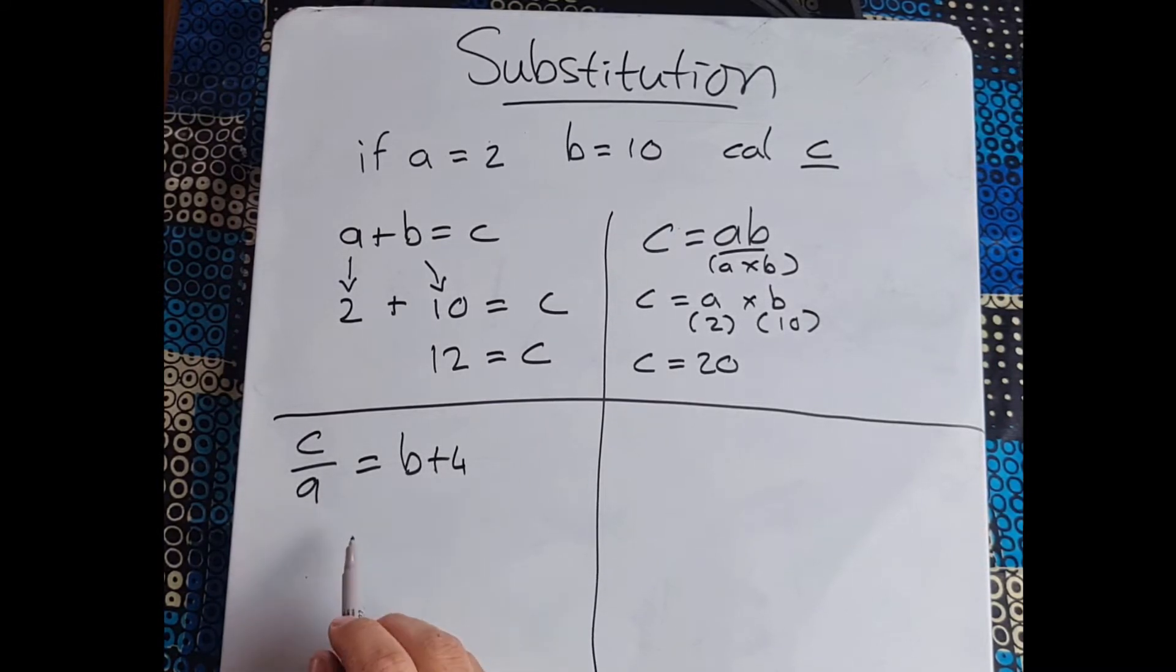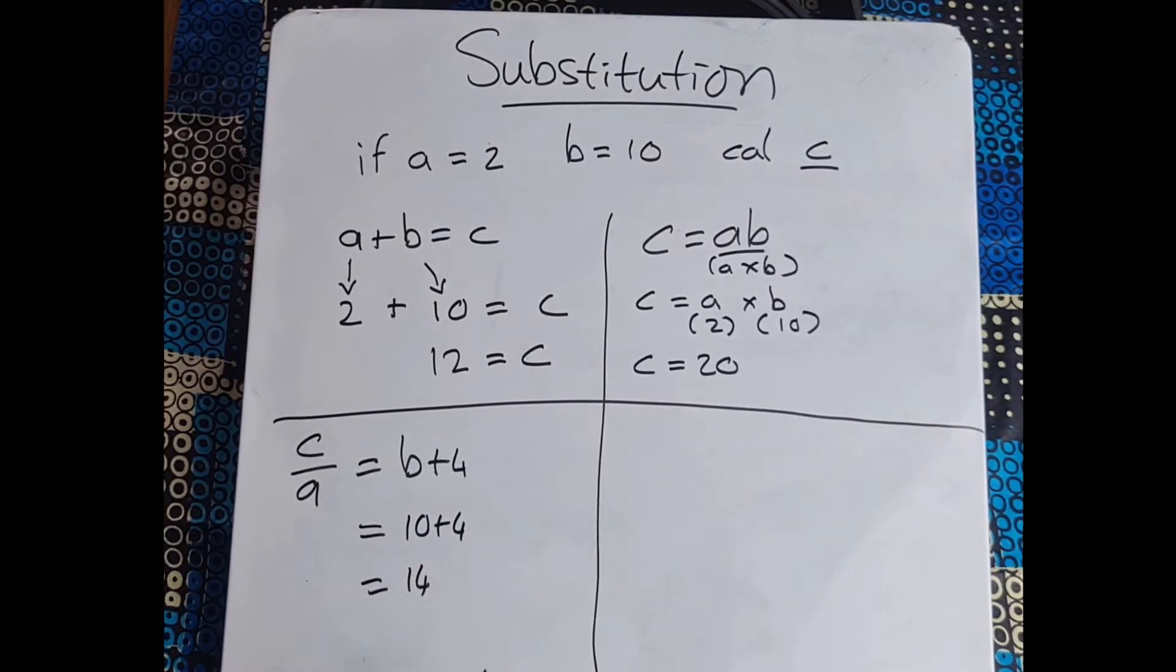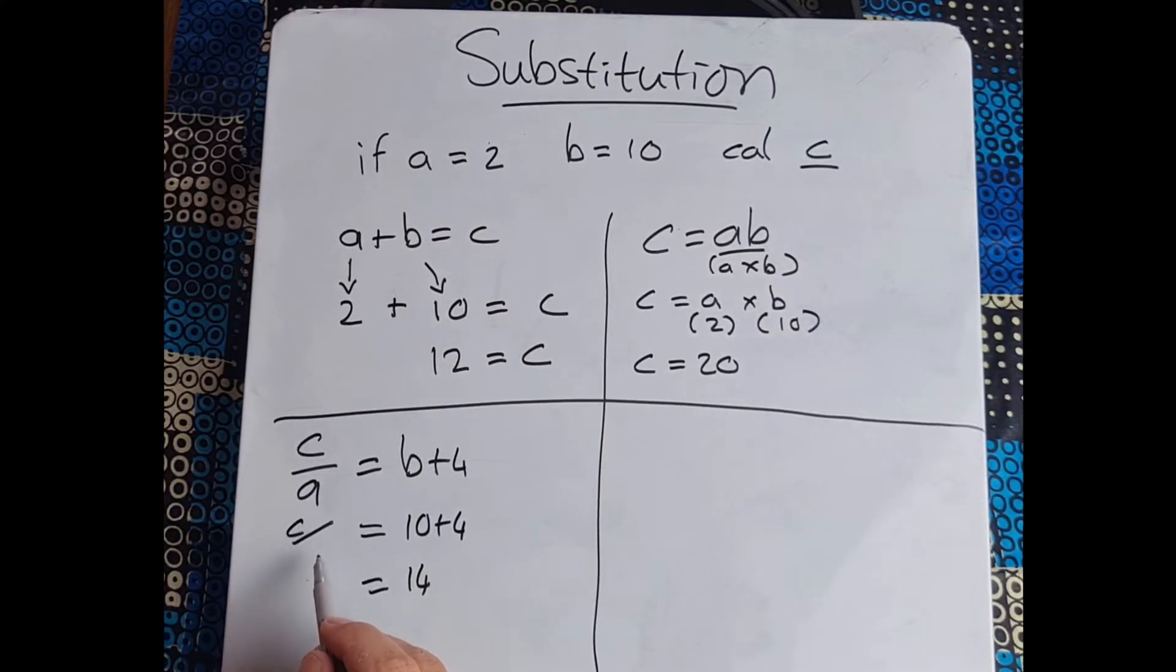So let's look at the right hand side first. We know what b is, b is 10, so this is 10 plus 4, so we know that that side is 14. Now c over a, what is that going to be? It's actually c divided by 2.